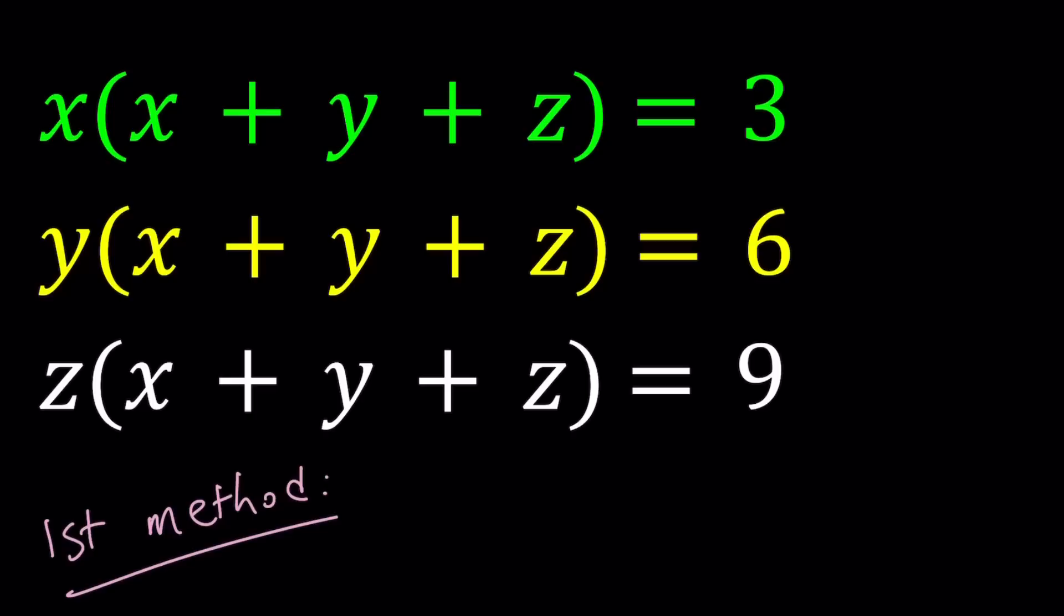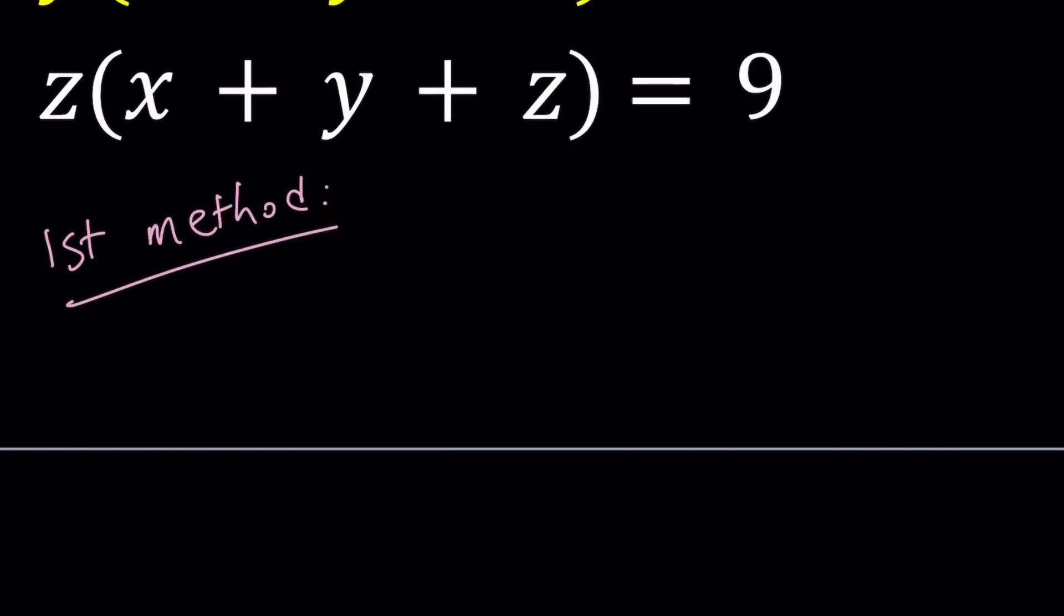So for my first method, I'm going to do something that probably a lot of people thought about. x plus y plus z is repeated, so we can kind of isolate it from all of these equations. From the first one, x plus y plus z can be written as 3 over x. From the second equation, it can be written as 6 over y. And from the third one, it can be written as 9 over z.